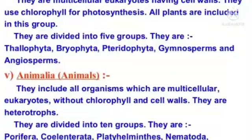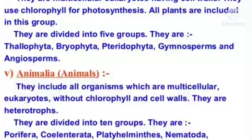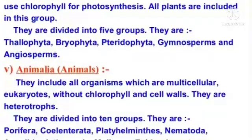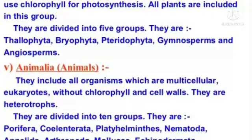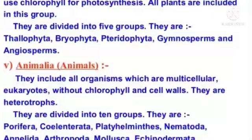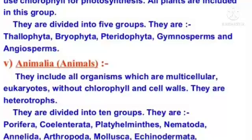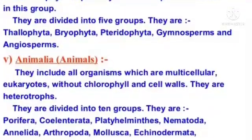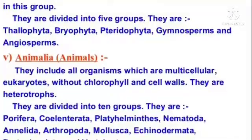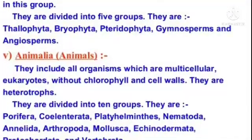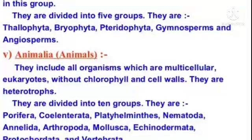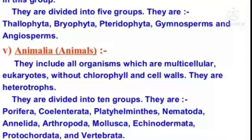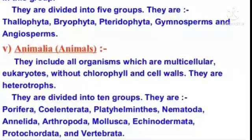Animalia: They include all organisms which are multicellular eukaryotes without chlorophyll and cell walls. They are heterotrophs. They are divided into 10 groups: Porifera, Coelenterata, Platyhelminthes, Nematoda, Annelida, Arthropoda, Mollusca, Echinodermata, Protocordata, and Vertebrata.